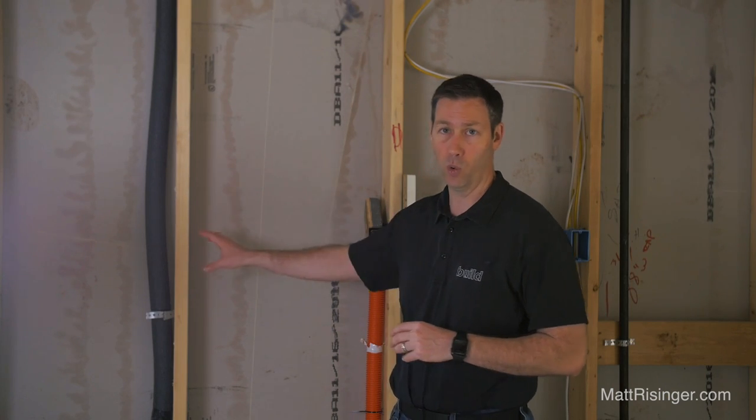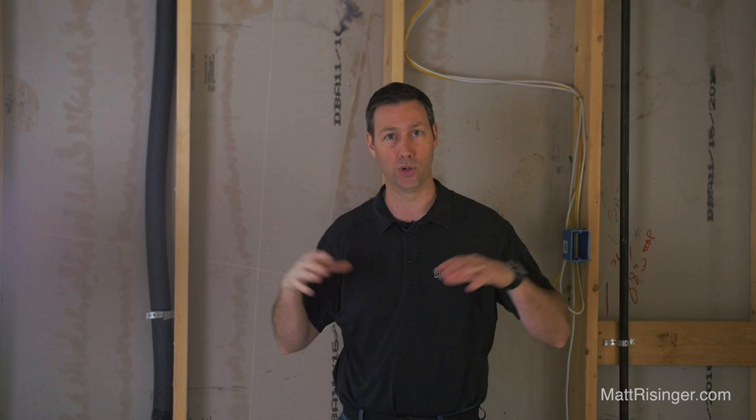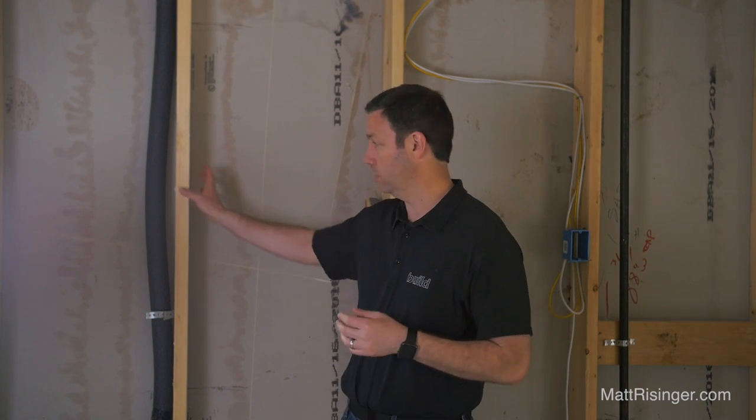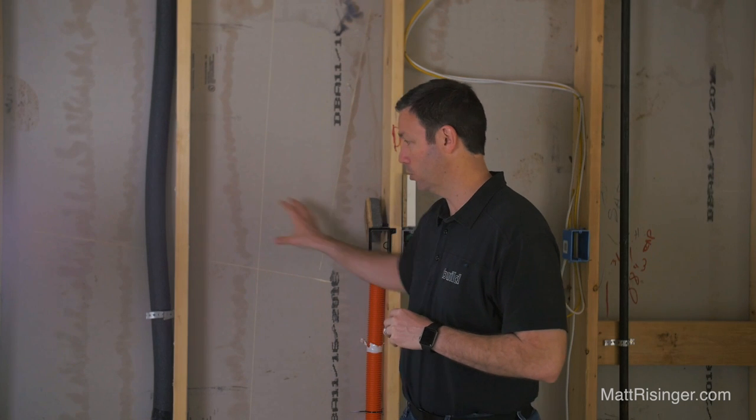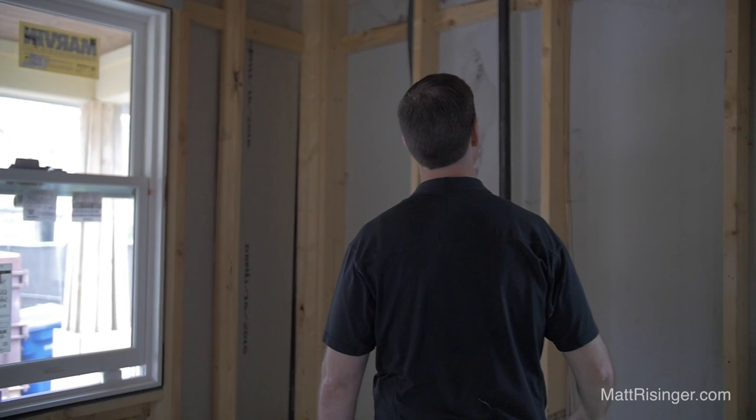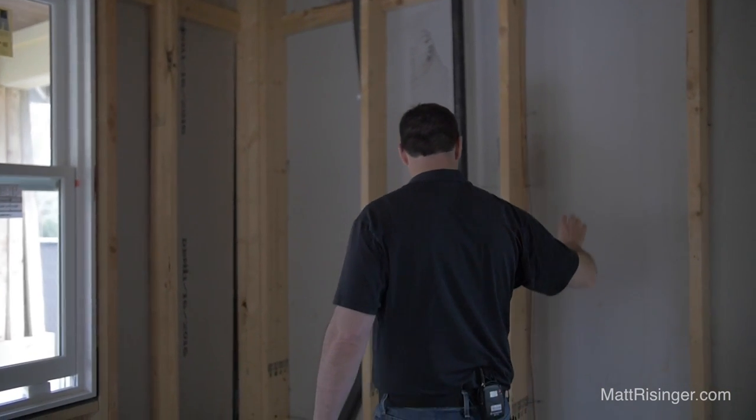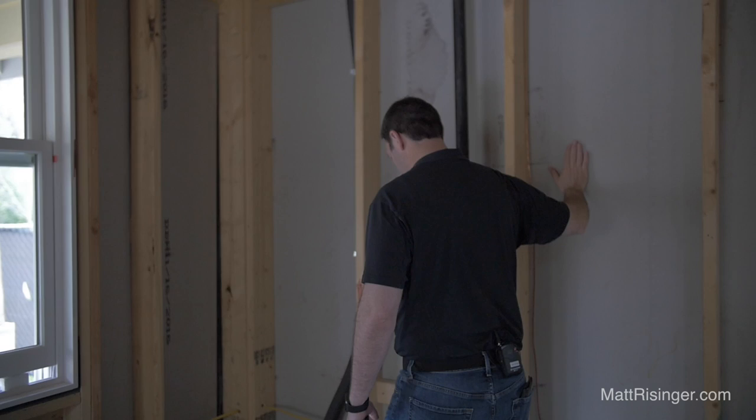Now let's have a look at this advanced frame house and think about the differences between this one and the traditional frame house we just left. The first thing you're going to notice is 2x6 walls on 24 inch centers. The reason we want to reduce the lumber overall is because a stud like this 2x6 is roughly R6, but the cavity can be filled with R19 using batts or maybe R20 using blown-in or a total fill. So if we can reduce those studs without hurting the structure, we can get a better R-value for the overall wall.